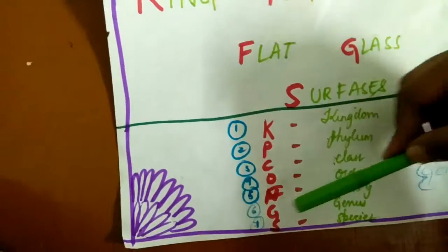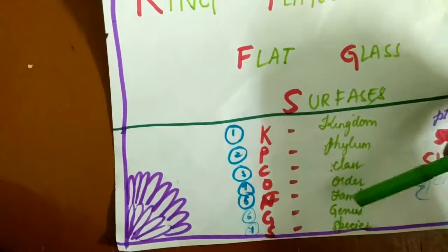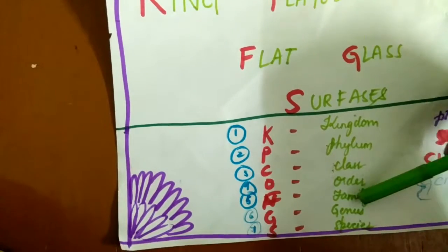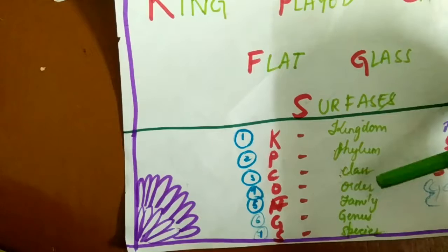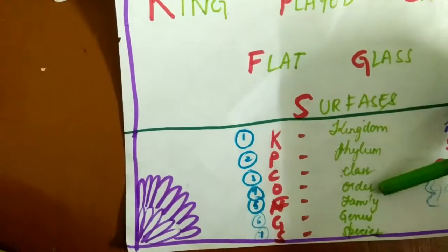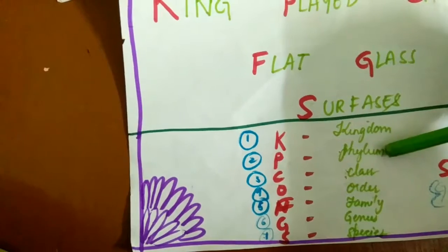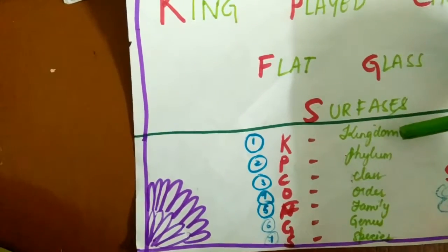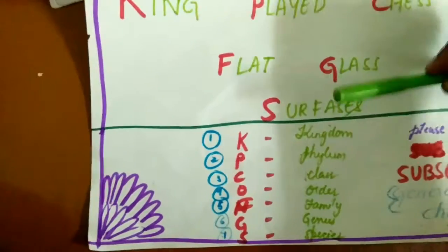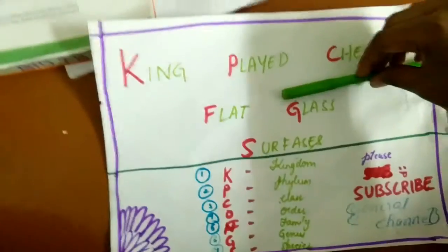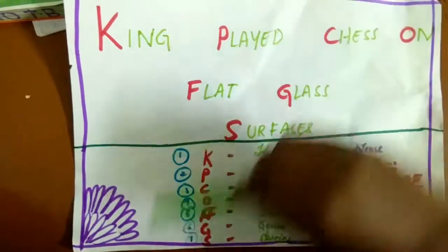All species together form a genus, all genera together form a family, families put together form an order, orders together constitute a class, classes together constitute a phylum, and phyla together constitute a kingdom. All kingdoms together constitute the diversity in living organisms.